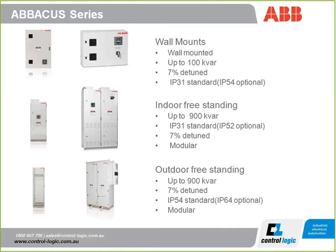So what does ADB have in the way of power factor correction? On the LV side they have their Abacus series. They have basic wall-mounted units going up to 100 KVA — at 100 KVA that would be two steps of 50 KVA. IP31 is standard, however there are many options including IP54 for a higher IP rating. They also have a 7% detuning reactor as standard on all units. The purpose of the detuning reactor is to block harmonic currents from flowing into the capacitors and causing them to fail prematurely.